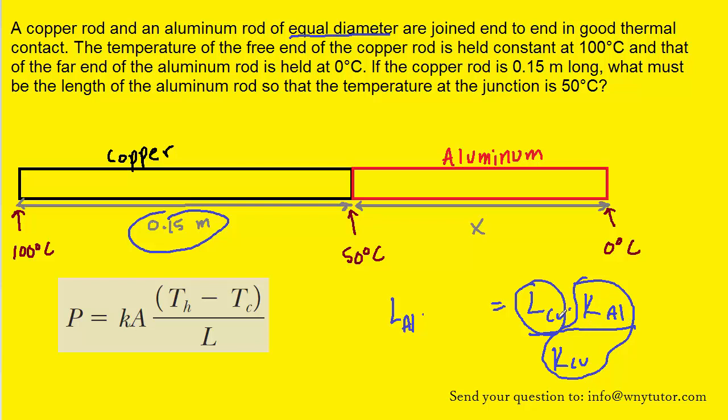So let's go ahead and plug in the numbers. Again, these values were given in a table in your chapter. And when we simplify this, we get 0.09 meters. Or if you prefer, you can move the decimal over two places to get 9 centimeters. And that should be the correct answer.